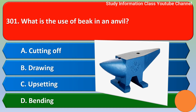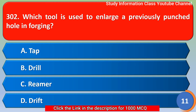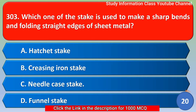Next question: which tool is used to enlarge a previously punched hole in forging? Option A: tap, Option B: drill, Option C: remove, Option D: drift. For this question, the right answer is Option D, drift. Option D is the right answer.